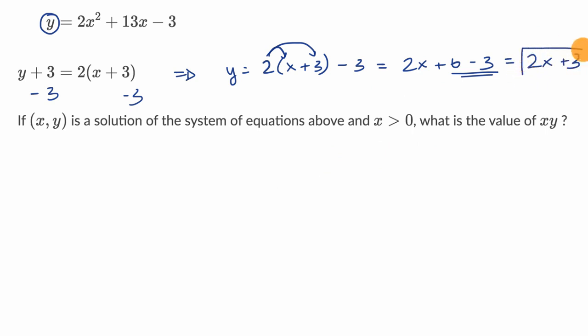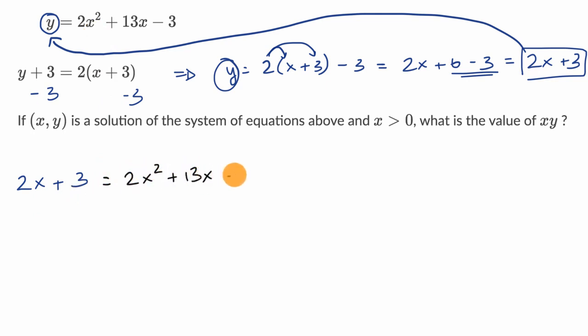And so now I can take this, this is equal to y, so we could substitute this back in for y and we would get two x plus three is equal to two x squared plus 13 x minus three.